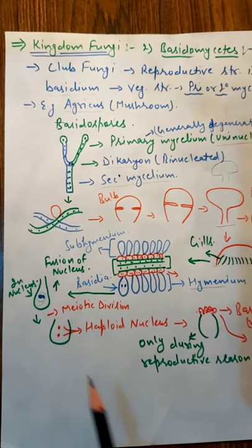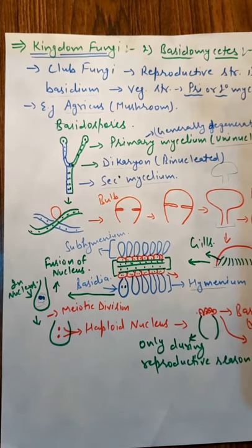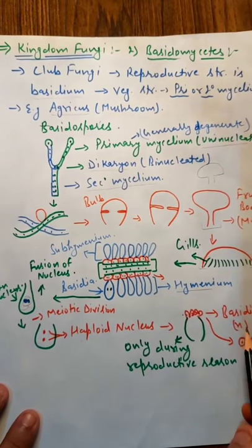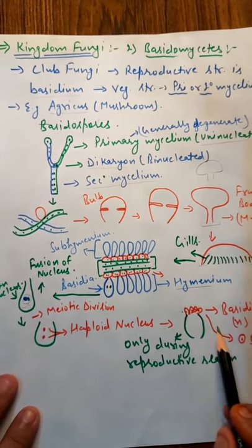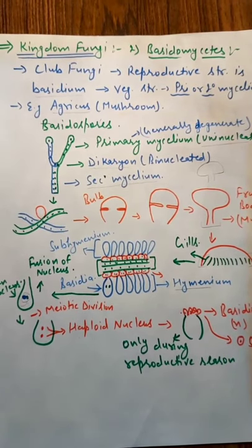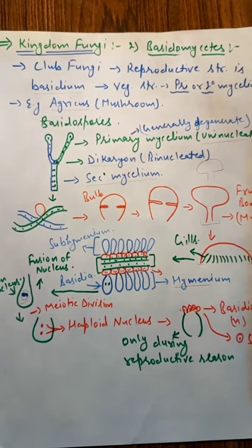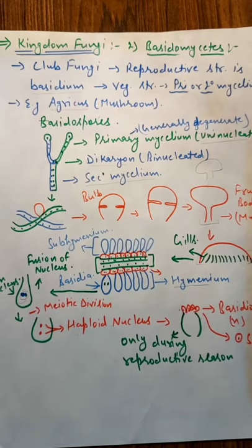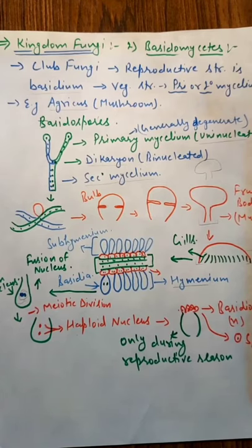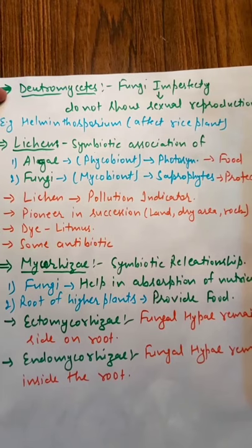These haploid nuclei will generate basidiospores. Here in haploid condition, basidiospores will form in the basidium and these spores will spread wherever they find space. These basidiospores will form only during the reproductive season. So this is the sexual reproduction in Basidiomycetes.